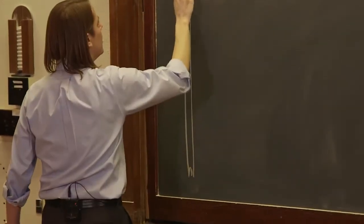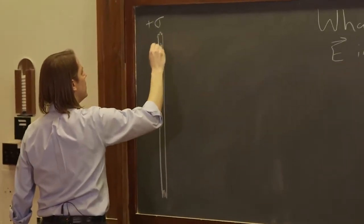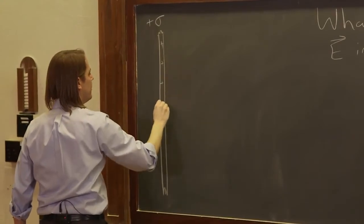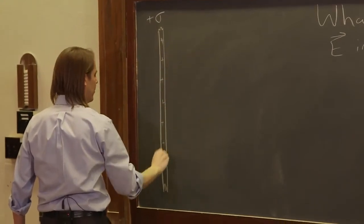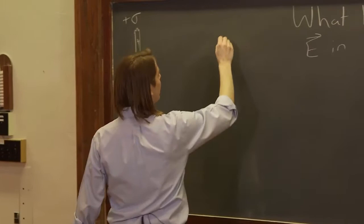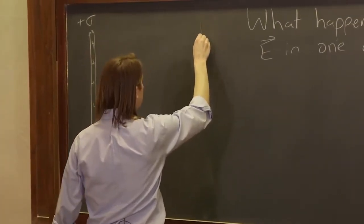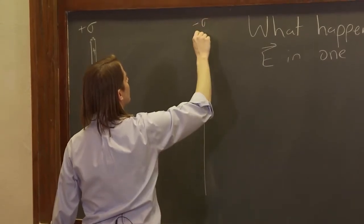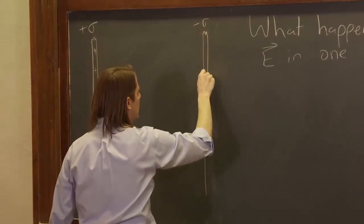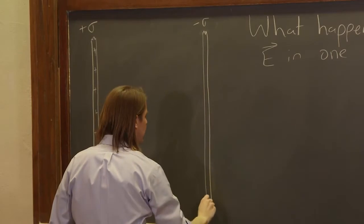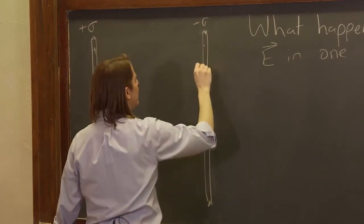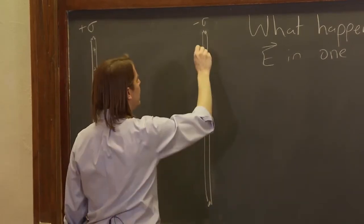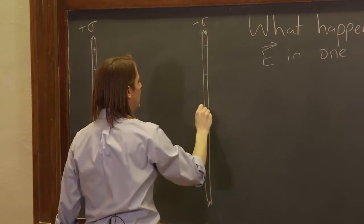All right, so there is your plus charge, and we know that that itself would make a uniform field. Let's go ahead and have one over here that is the minus charge, minus sigma, and it also is infinitely large. So the only dimension we really care about is that way, and everything's infinite in the other dimensions.